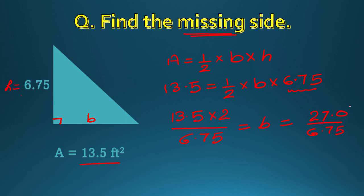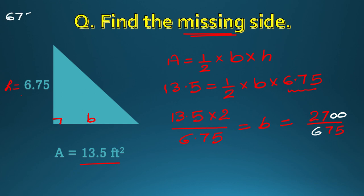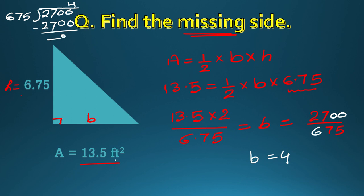Now in the denominator you have 2 decimal places, but in the numerator you don't have any decimal place. So cancel and write two zeros — that gives 2700 divided by 675. I think it will be divided 4 times: 4 fives are 20, 4 sevens are 28 carry 2, 4 sixes are 24 carry 3 — 27. So the answer is 4. They have written foot square, so it will be 4 foot. In this question only the calculation was a little difficult; otherwise the question was easy.